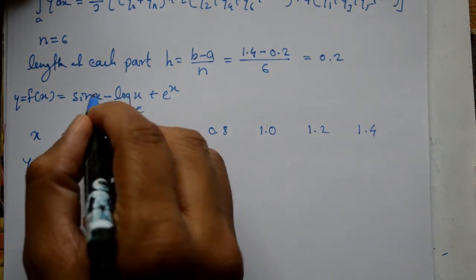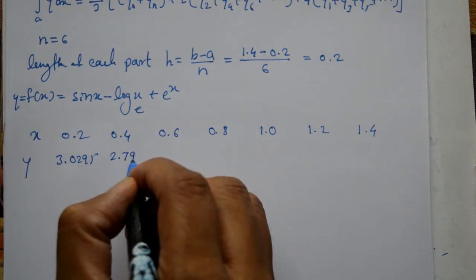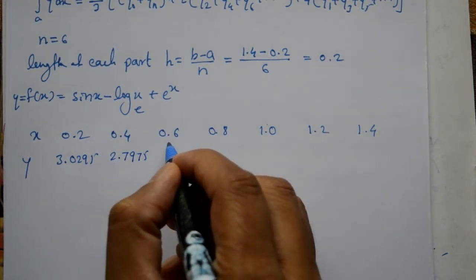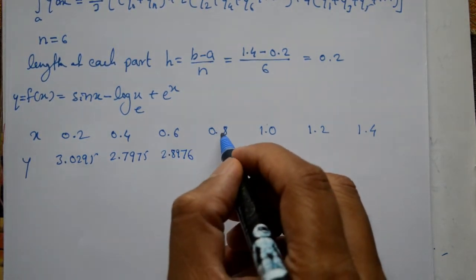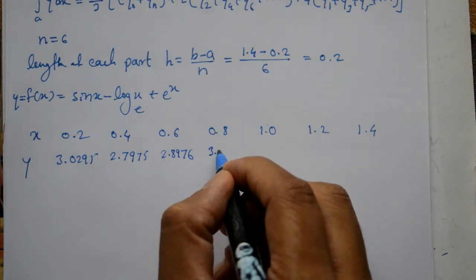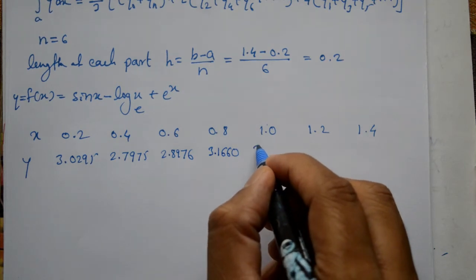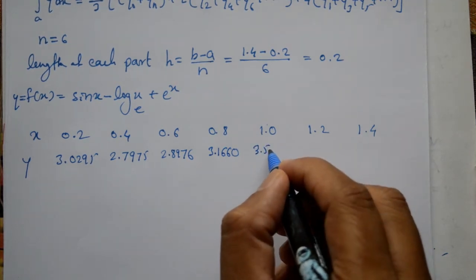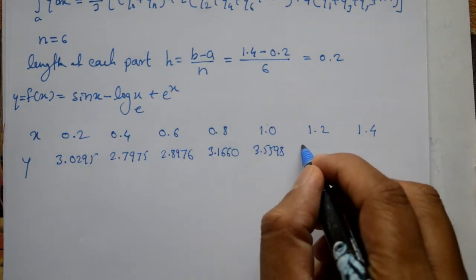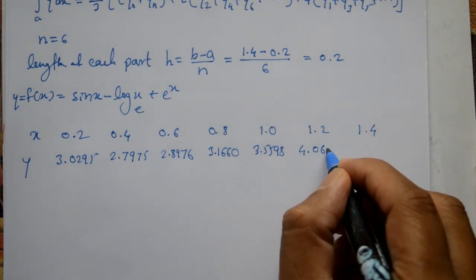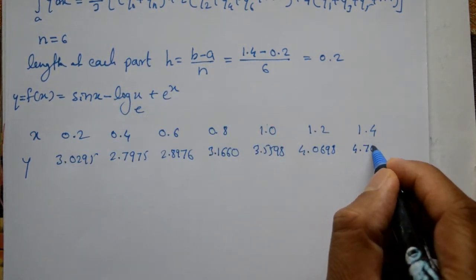Substitute 0.4 for x: we get 2.7975. Then 0.6: 2.8976. Next 0.8: 3.1660. Then 1.0: 3.5598. 1.2 gives 4.0698. Finally 1.4 gives 4.7042. Use radian mode.